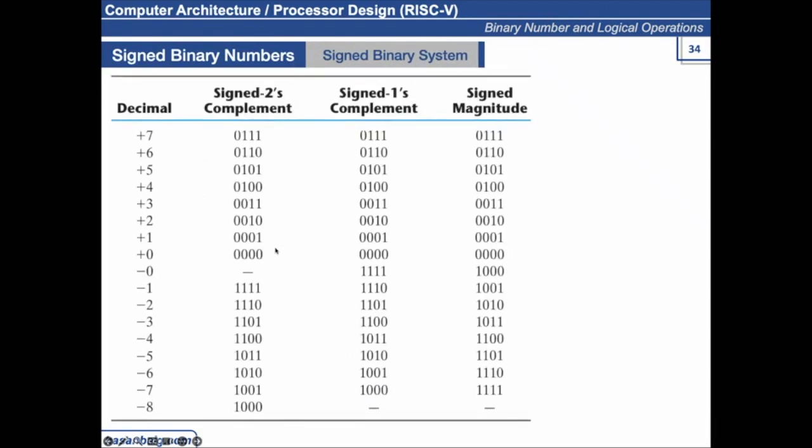This is a chart for sign binary number system. Here you can see that all positive numbers have 0 at the leftmost bit and negative numbers have 1s at the leftmost bit.